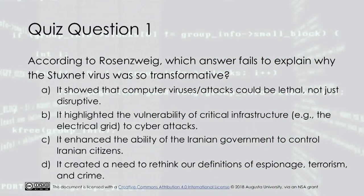Quiz Question 1: According to Rosenzweig, which answer fails to explain why the Stuxnet virus was so transformative? A. It showed that computer viruses or attacks could be lethal, not just disruptive. B. It highlighted the vulnerability of critical infrastructure — e.g., the electrical grid — to cyber attacks. C. It enhanced the ability of the Iranian government to control Iranian citizens. D. It created a need to rethink our definitions of espionage, terrorism, and crime.